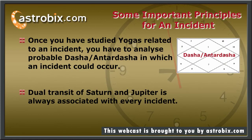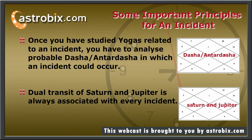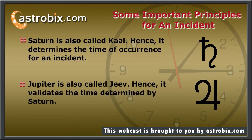Once you have studied Yogas in your Janna Kundali, you will need to analyze Dasha Antar Dasha during which the incident might occur. When you know which Dasha Antar Dasha will play an important role for the incident, you need to analyze dual transit of Jupiter and Saturn. The dual transit of Jupiter and Saturn is always present in the Kundali for the occurrence of an incident. Without this transit, nothing happens in your life. Saturn is also called Kal, which means time. Hence, Saturn determines the time for every incident. Jupiter is also called Jeeve, and it validates the time determined by Saturn for an incident.